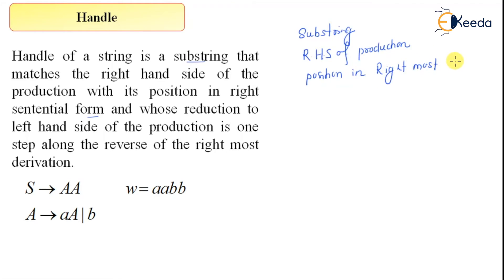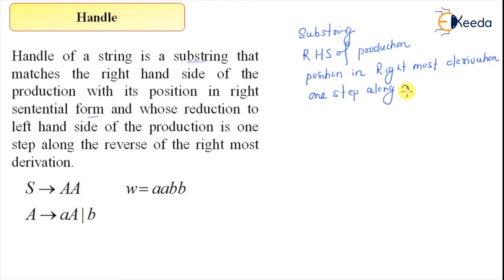An intermediate step of the rightmost derivation. And whose reduction to the left-hand side of the production is one step along the reverse of the rightmost derivation — that is another key term: one step along the reverse of the rightmost derivation.